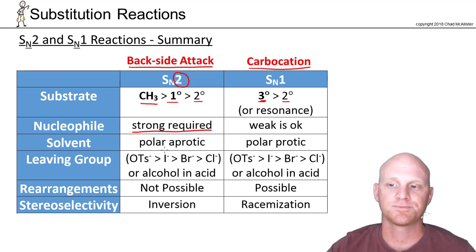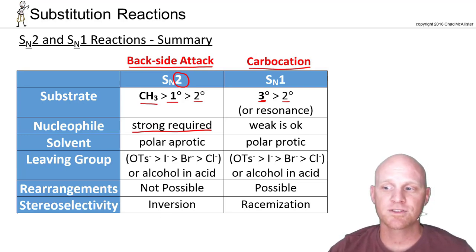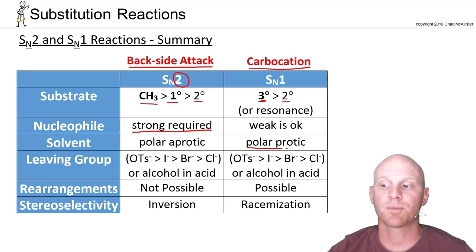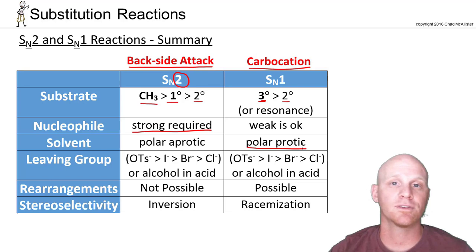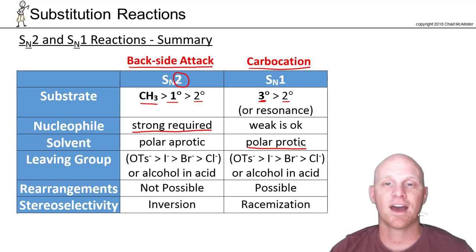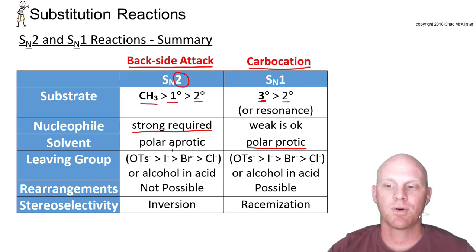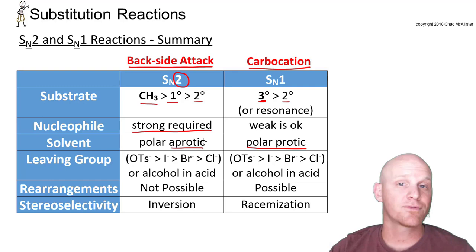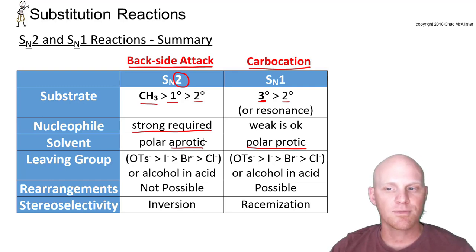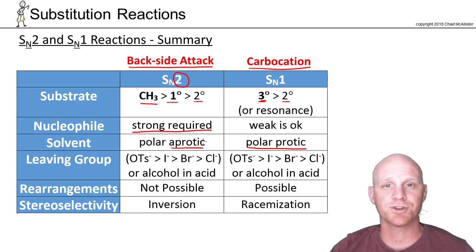For the solvent, SN1 is all about the carbocation, and we need to stabilize that carbocation — that's what polar protic solvents do. They solvate and stabilize ions well. For SN1 the solvent has to be polar protic, but for SN2 polar aprotic is preferred and in some cases necessary, though sometimes we can get away with polar protic solvents for some of those larger nucleophiles.